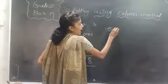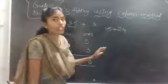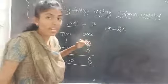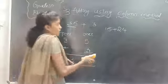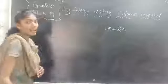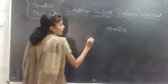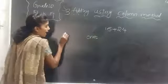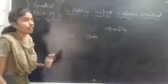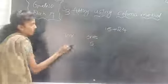Let me take one more example children: 15 plus 24. I want to add 15 with 24. Here I am adding 2 digits with 2 digits. You are adding a 2-digit number with a 2-digit number. So what do I have to do first? We have to arrange by place values. Which place values do we have in 2-digit numbers? 1s and 10s. In 15 we have 5 ones and 1 ten. And in 24 we have 2 tens and 4 ones.